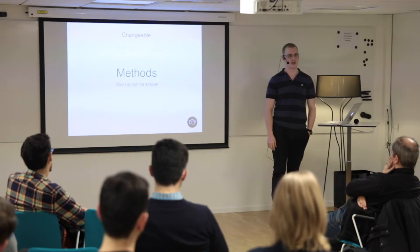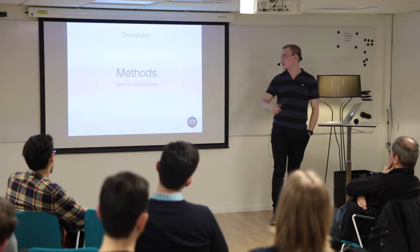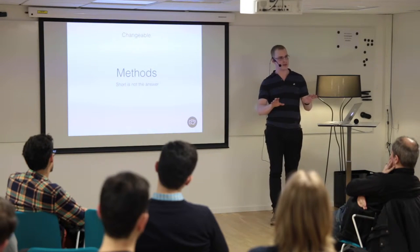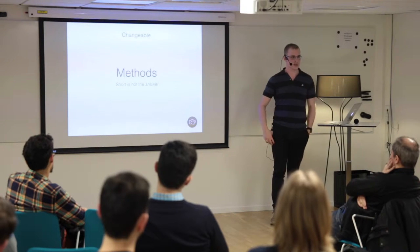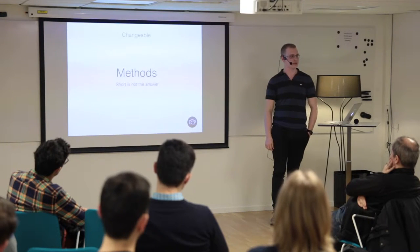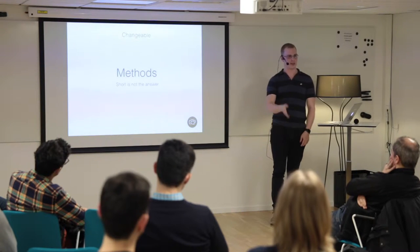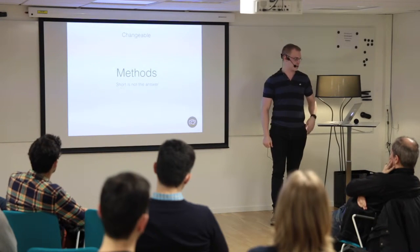A lot of people say let's just try to keep methods short to make them clean and understandable. But again, length doesn't have to be the problem. There are plenty of 400-line methods that are fine — just 400 lines of drawing code straight up and down, single level, nothing hard to understand. I think that's a great method. So short is not really the key issue here.